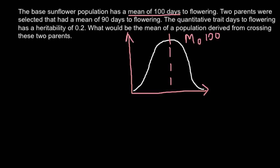Also, somewhere here we would have plants that flower in 90 days, and here we would have plants that flower in 110 days. But as you see, according to our curve, we would have very few plants that flower in 70 days, and very few that flower in about 120 days. So the majority would flower between 90 and 110 days, and the mean of this population is 100 days.